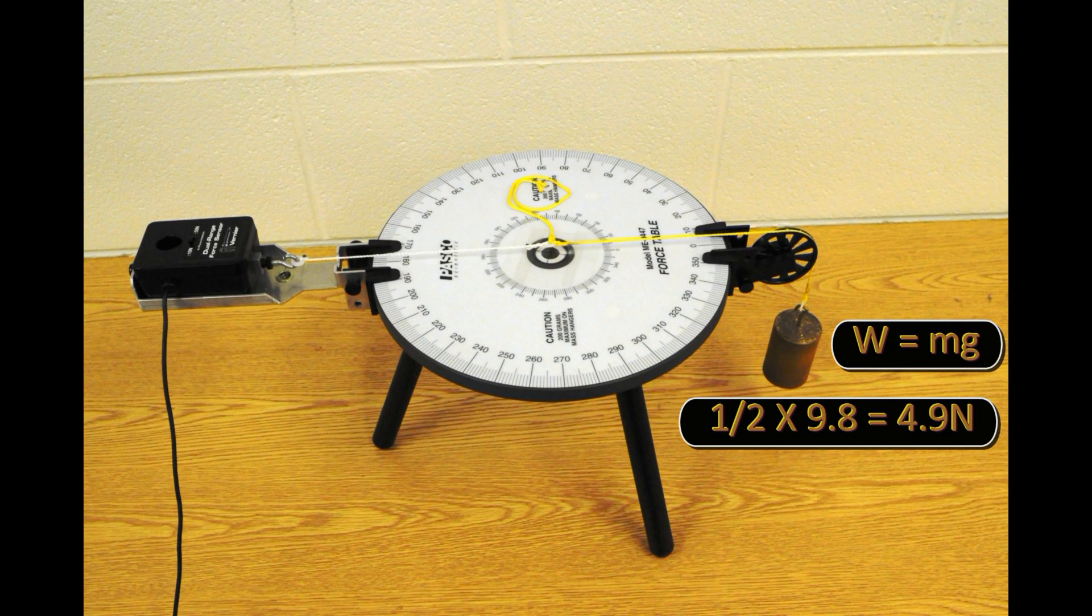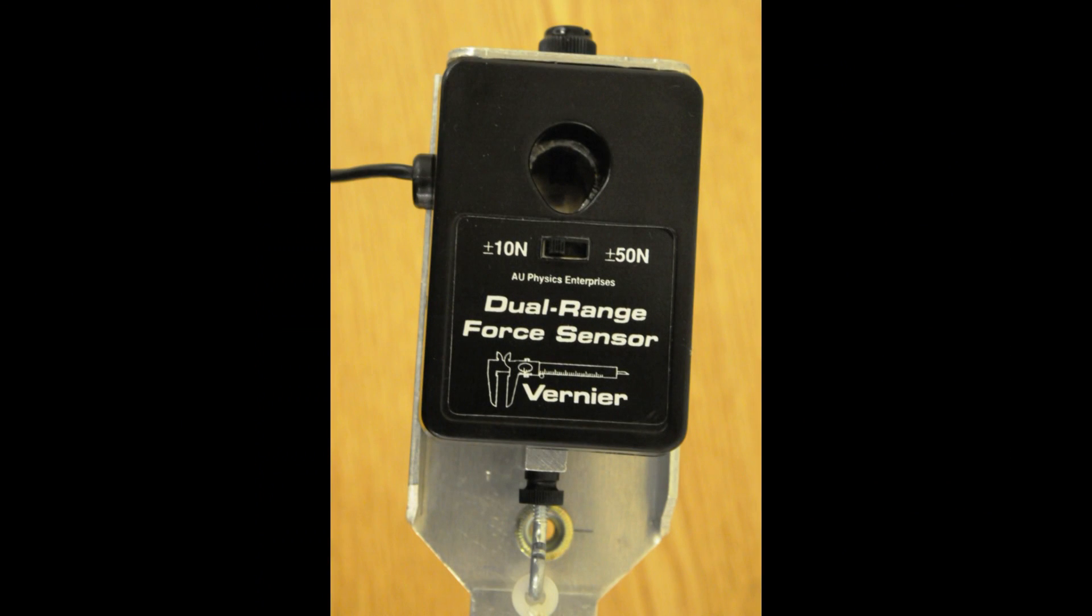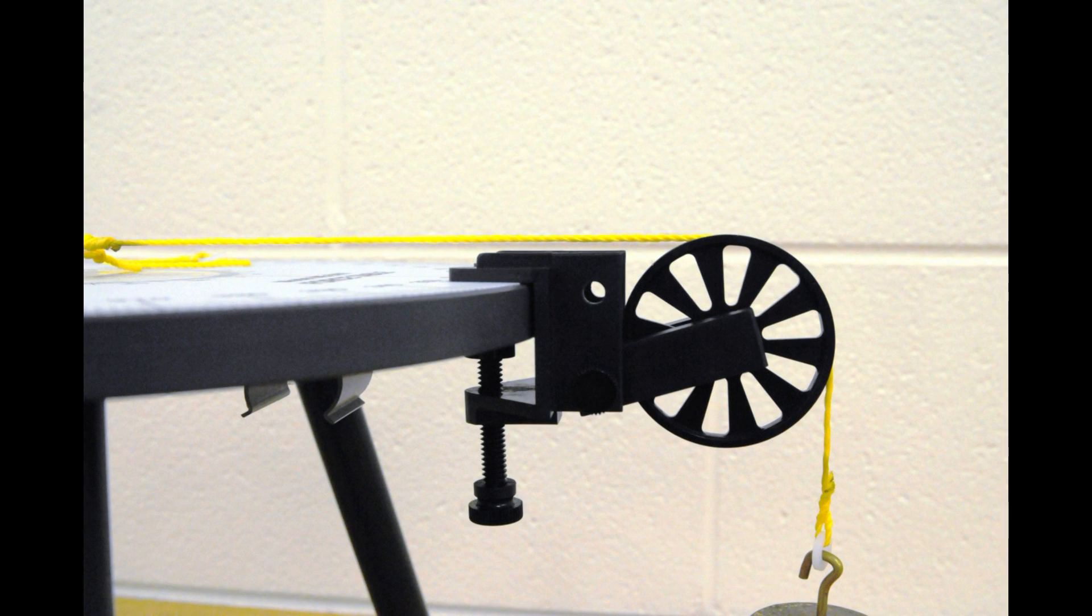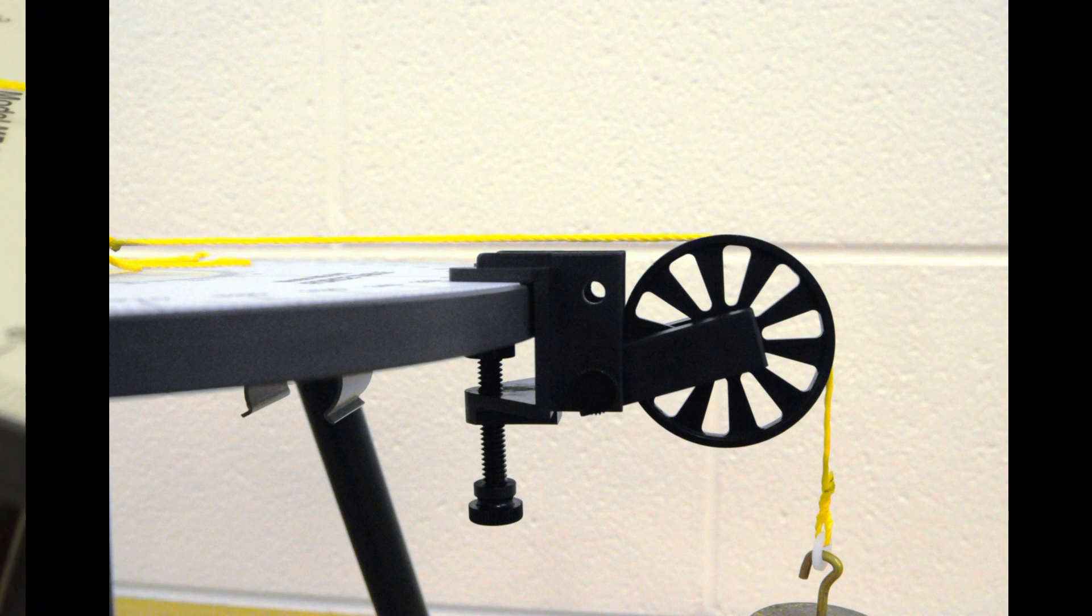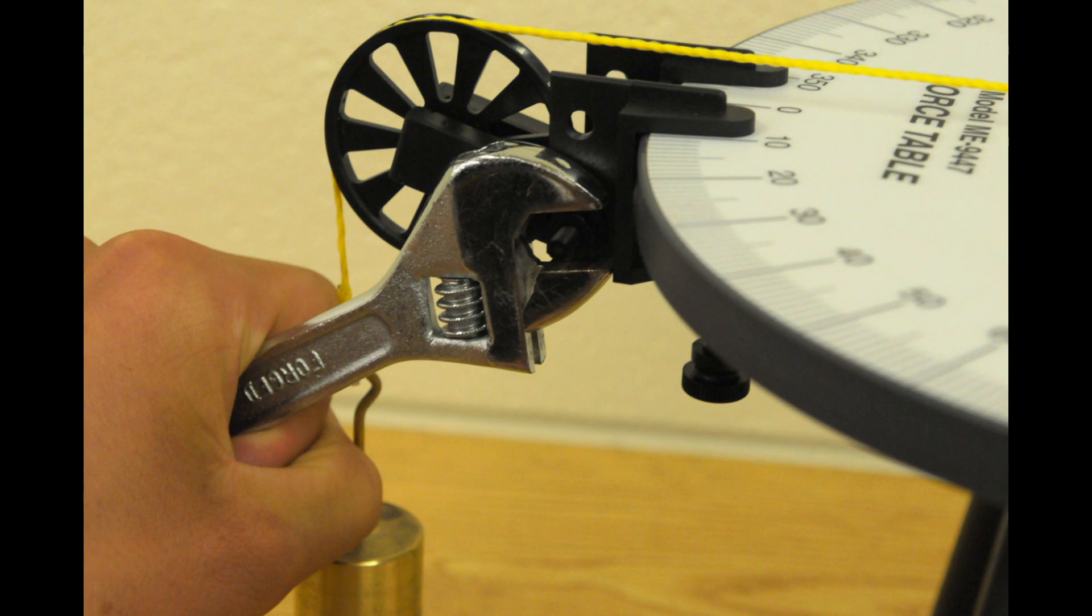The white string is of a length to connect the force sensor, whereas yellow strings run over the pulleys to the hanging weights. Flip the range switch over to plus or minus 10 newtons maximum force. Make sure that the strings on pulleys are exactly horizontal above the force table. If the string is not horizontal, loosen the nut, adjust the pulley angle, and then retighten the nut.